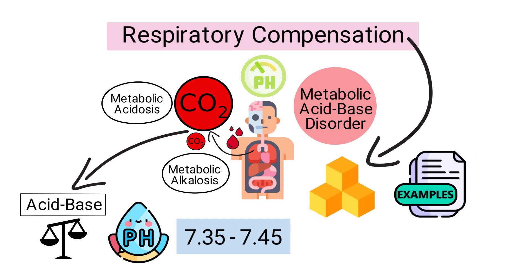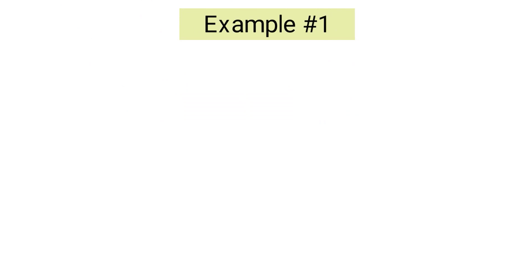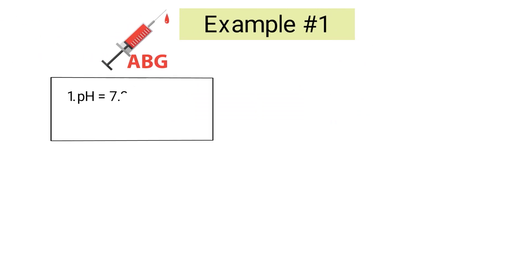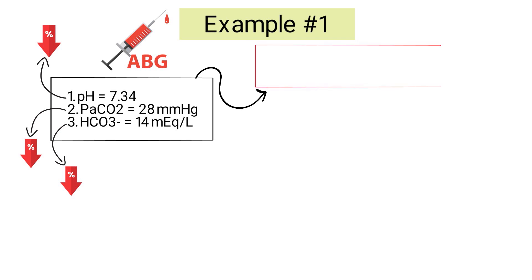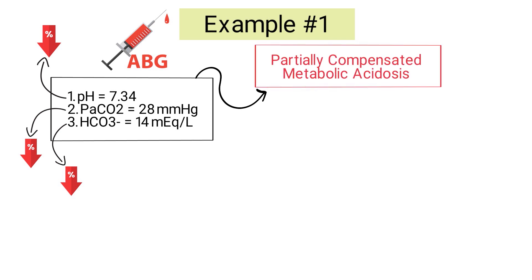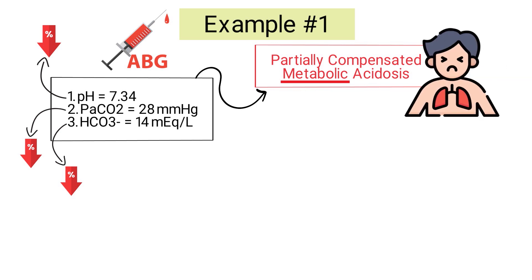One of the most effective ways to learn Winter's formula is to practice with patient data. For example, a patient has the following ABG results: pH of 7.34, PaCO2 of 28, and bicarb of 14. The pH is slightly decreased and outside the normal range; the PaCO2 and bicarb are both decreased as well. This ABG can be interpreted as partially compensated metabolic acidosis — the patient has a metabolic issue causing the lungs to work harder to compensate.